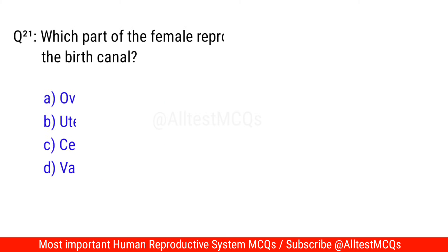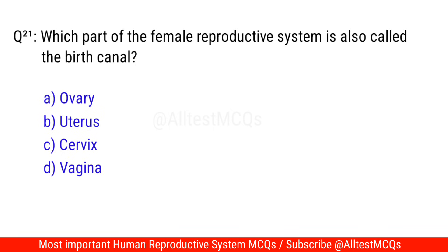Question No. 21: Which part of the female reproductive system is also called the birth canal? The correct option is D. Vagina.